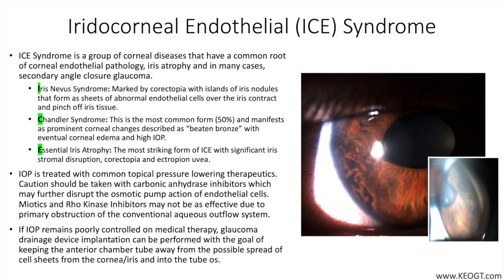The differential diagnosis is composed of angle-closure glaucoma, uveitic glaucoma, traumatic glaucoma, neovascular glaucoma, and epithelial downgrowth. Other disease processes often included in the differential include posterior polymorphous corneal dystrophy, Axenfeld-Rieger syndrome, and aniridia, all of which are distinguishable from ICE with careful clinical examination. A helpful distinction is the unilateral nature of ICE.